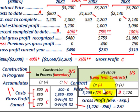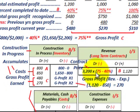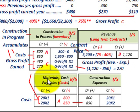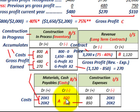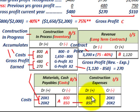We also credit out the materials, cash, and payables — all those contract costs — and move them into the Construction in Progress account. The first year's costs were $800,000 and the second year's were $850,000. Those credits go as debits to construction expenses on the income statement. So for year 20x2: revenues of $1,120 minus construction expenses of $850 gives us gross profit of $270.